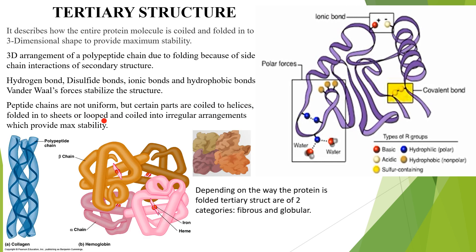In the tertiary structure, the peptide chains are not uniform — some parts are coiled into helices, some are in sheet form, and some parts are looped. Depending on how the chains are folded, proteins take two shapes: fibrous proteins, which are thin filament-like structures such as keratin in hair, and globular proteins, which are spherical, such as hemoglobin and egg proteins. Fibrous proteins are insoluble in water, while globular proteins are soluble in water.